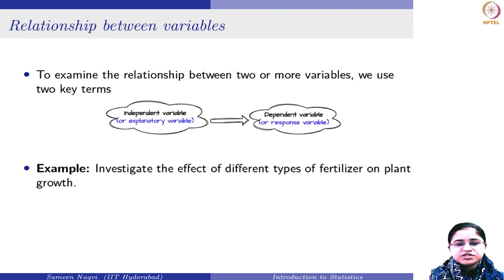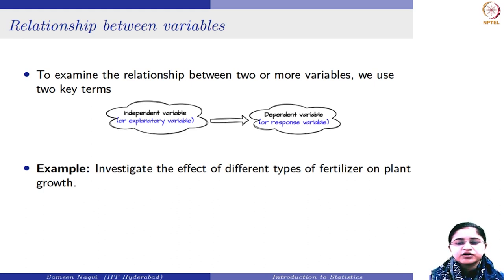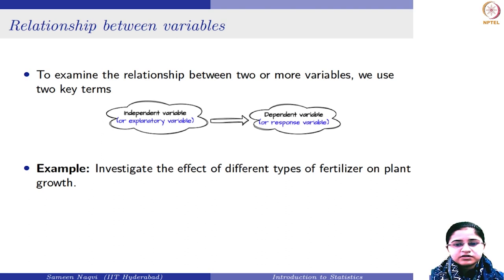An example for this: suppose you want to investigate the effect of different types of fertilizers on plant growth. Here, types of fertilizers can be of various types and it is also under your control — you can choose different types of fertilizers. So types of fertilizers is your independent variable because it is under your control, whereas plant growth is your dependent variable because you measure how tall the plant has grown based on the different types of fertilizers you have added.